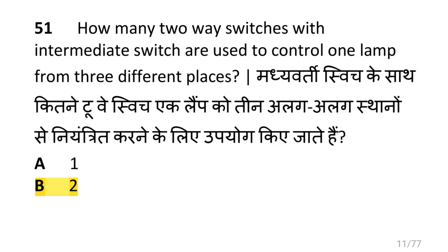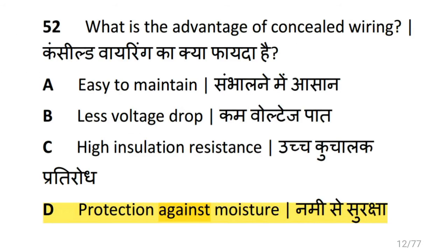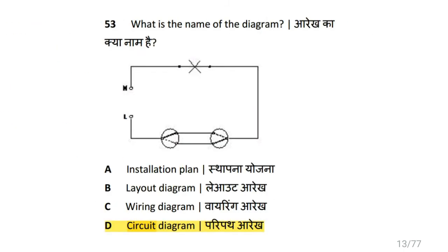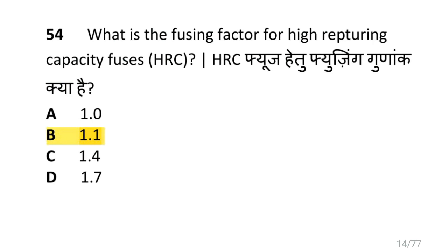How many 2-way switches with an intermediate switch are used to control one lamp from 3 different places? That is 2 two-way switches. What is the advantage of concealed wiring? It gives protection against moisture. What is the name of this diagram? That is a circuit diagram. What is the fusing factor for high rupturing capacity fuses? That is 1.1.